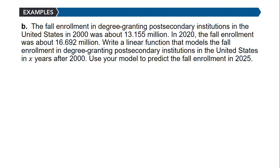Example B: The fall enrollment in degree-granting postsecondary institutions in the United States in 2000 was about 13.155 million. In 2020, the fall enrollment was about 16.692 million. Write a linear function that models the fall enrollment in degree-granting postsecondary institutions in the U.S. in x years after 2000. Then use the model to predict enrollment in 2025.